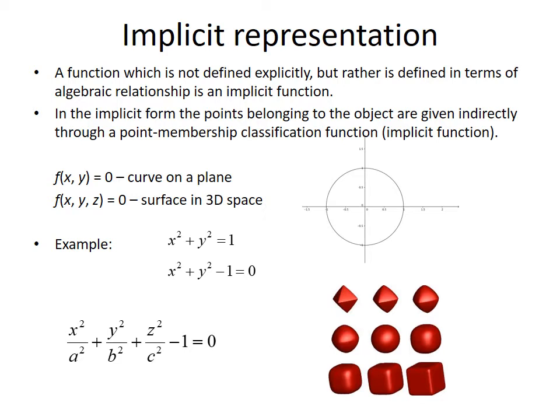In the implicit form, the points belonging to the object are given indirectly through a point membership classification function. Classification function here is an implicit function introduced before. What does it mean? It is easier to get the idea by an example.